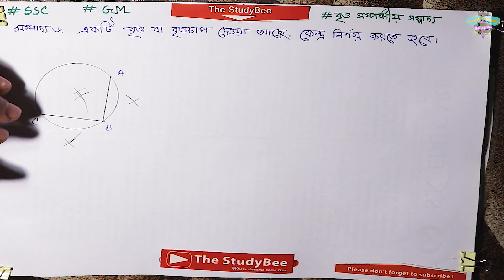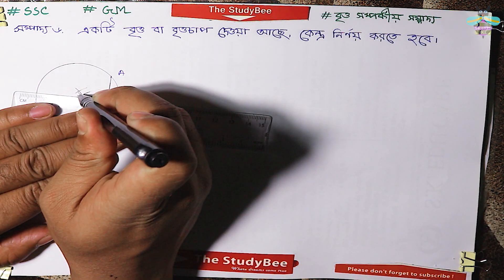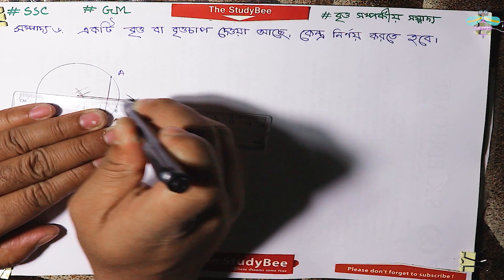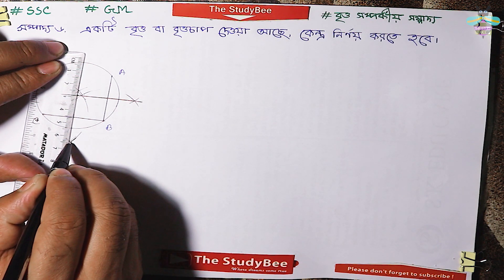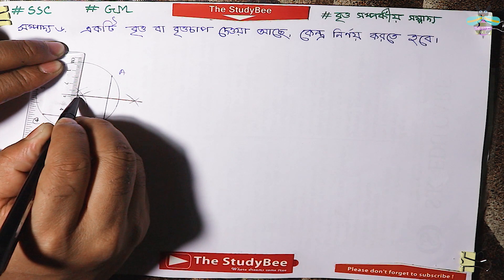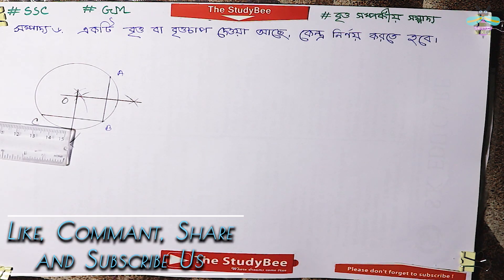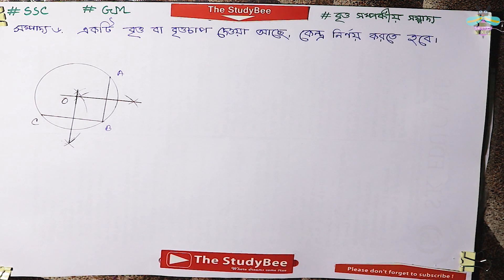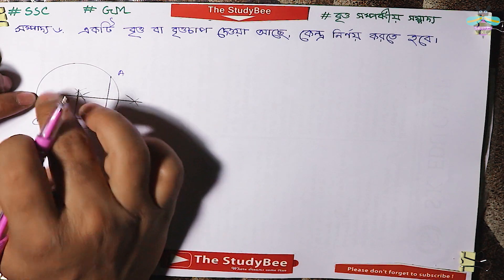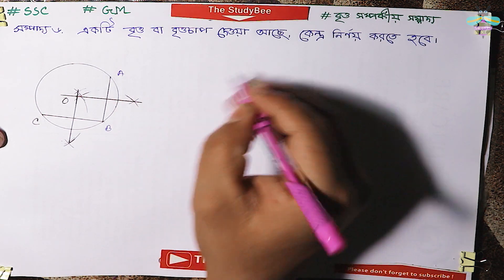এখন আমরা এই যে দুটো বিন্দু চাপে সমজুগ স্থল অর্থাৎ এখান থেকে যে আমরা যোগ করে এবং একই সাথে তার বিপরীত পাশে যে আমরা যোগ করে দেবো — আমরা বলতে পারি যে বিন্দুতে মিনুট। This gives you how to go and check these things.